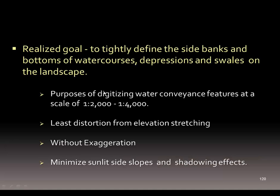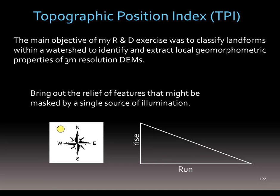We actually want to create some additional information to help us collect information from the surface. Not just see it on our screen, but actually see it clearly enough so that we're able to digitize those water conveyance features with very little distortion. So when we're digitizing, we're getting things in the right places without any exaggeration. We need another derived layer to help us in this regard, and that layer is the TPI, or the Topographic Position Index.